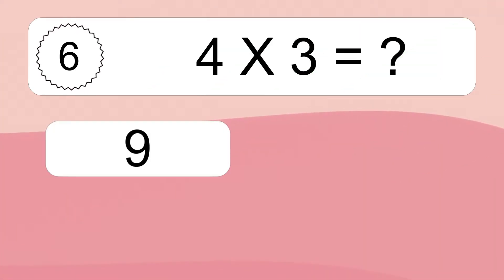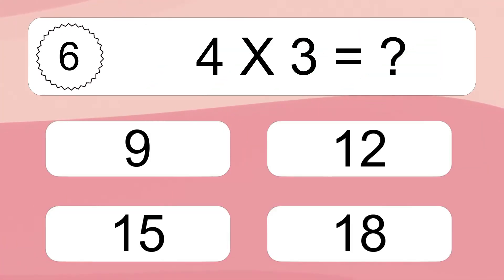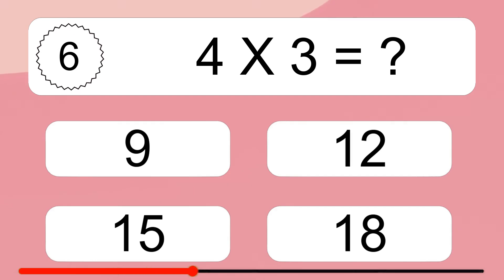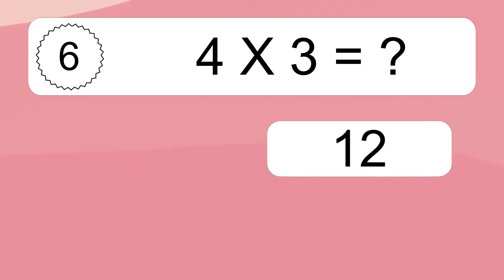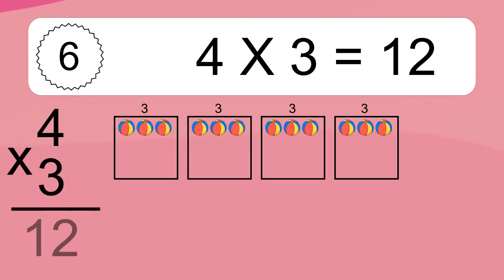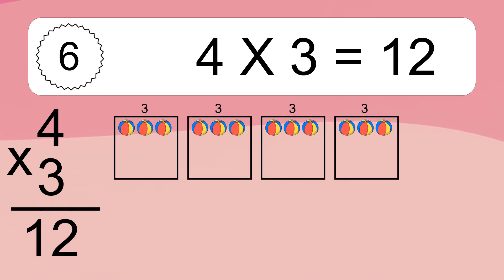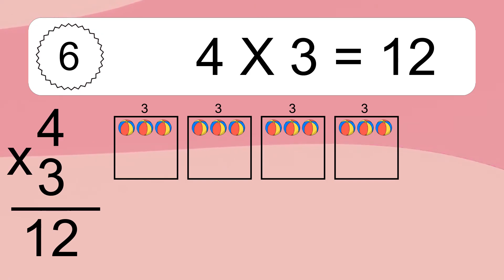Four times three equals what? Four times three equals 12. We have four boxes and each box has three colorful balls inside. If you count all the balls in all the boxes together, you will have four times three balls.